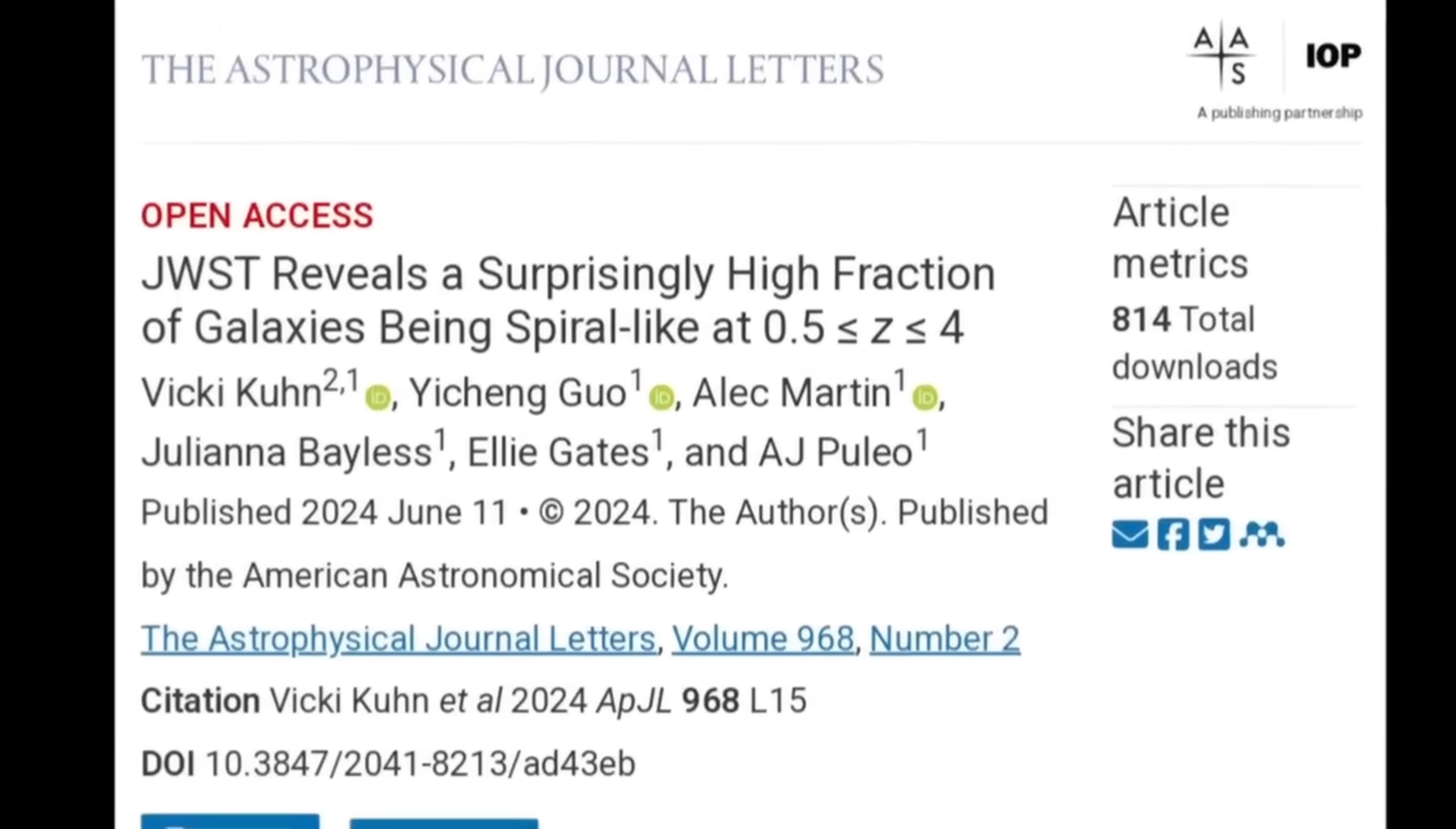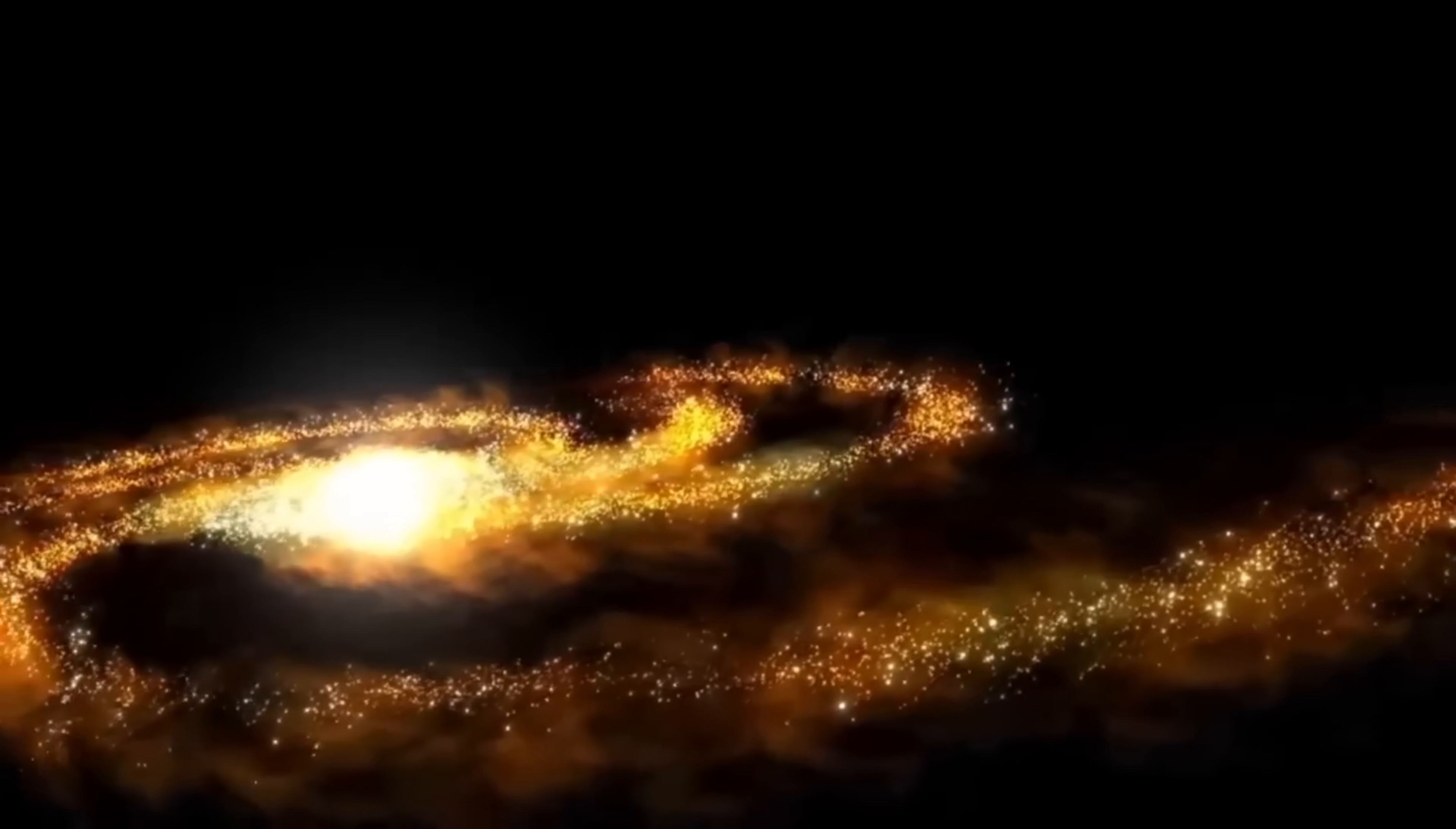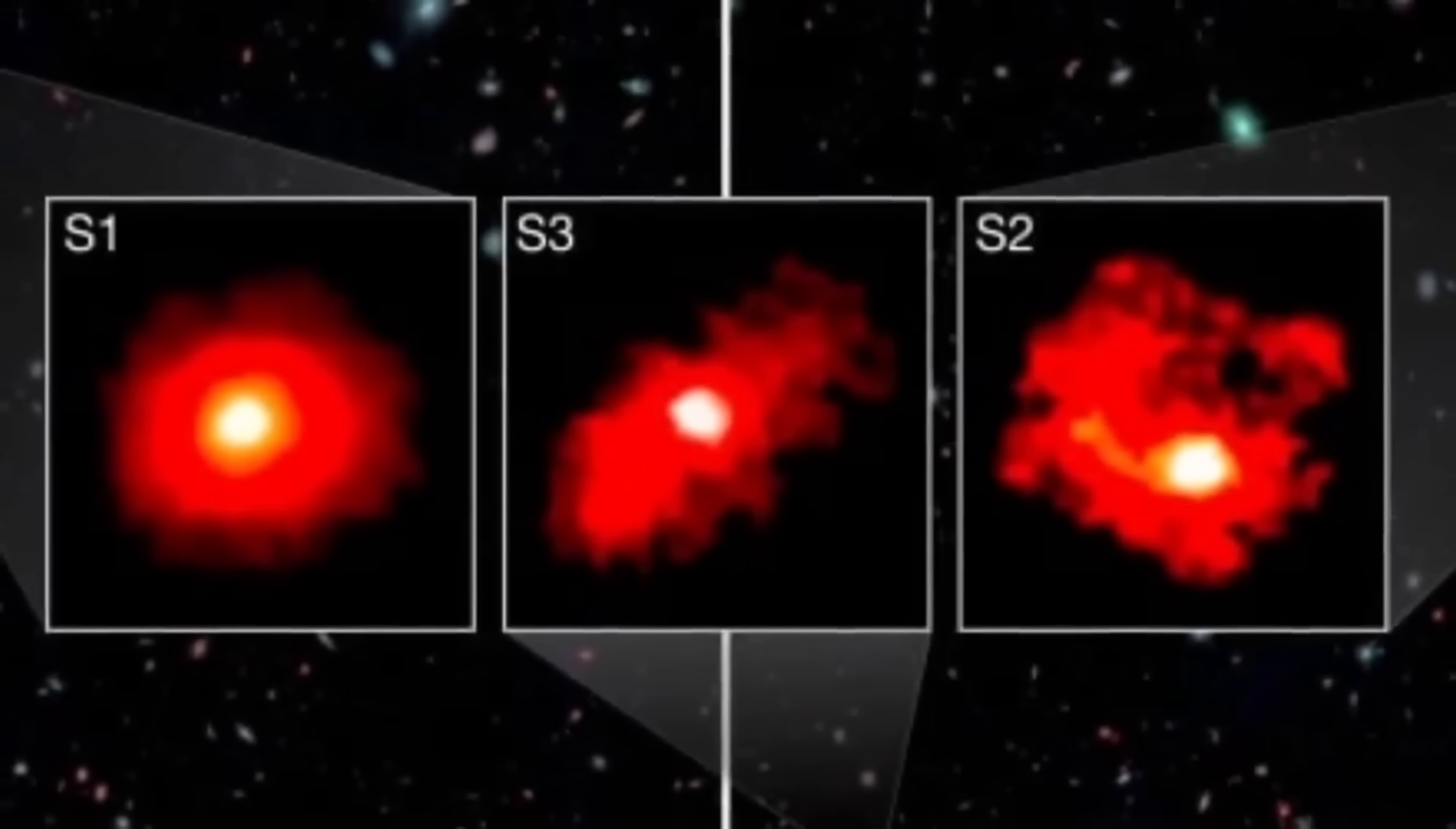Webb Telescope found that spiral galaxies like our Milky Way were much more common in the early universe than previously thought. Specifically, their research revealed that about 30% of galaxies exhibited a spiral structure as early as 2 billion years after the universe's formation. Previously, scientists believed that spiral galaxies took much longer to develop their distinct shapes. Now these discoveries are very puzzling because some galaxies are supporting the standard cosmic model, and some other galaxies are completely denying it.